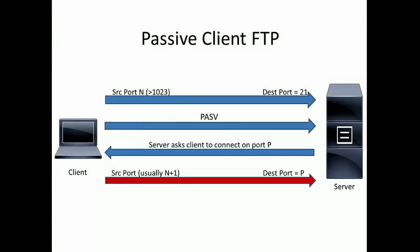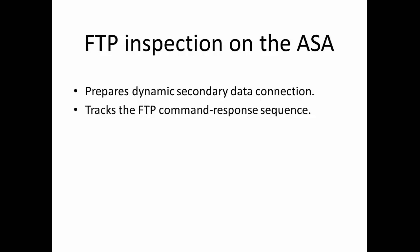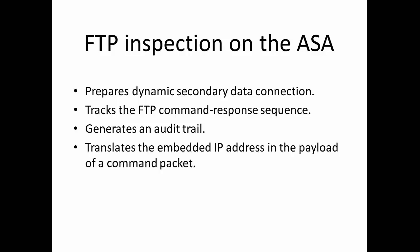Let's move on to how FTP inspection works on the ASA and what it accomplishes. The first thing FTP inspection does is prepare dynamic data connections. After the exchange of the port command and port information between the client and server, a secondary channel is opened for the data connection, and the ASA ensures that this connection is allowed. The second objective is to track the FTP command response sequence and generate an audit trail to ensure FTP-related logs are collected. One of the most important objectives is to change the embedded IP address in the payload, particularly in scenarios where NAT is involved over the firewall.